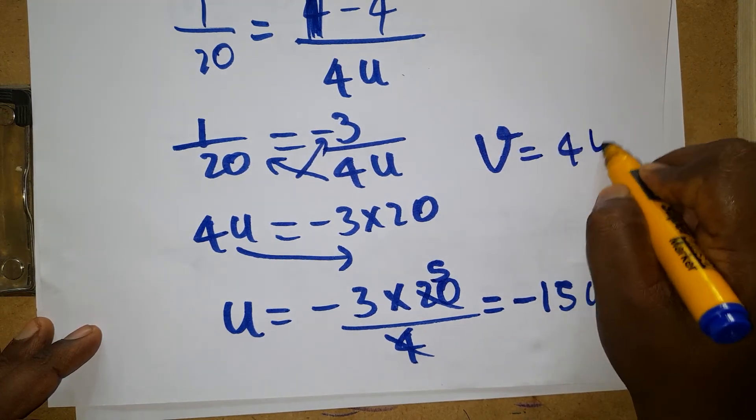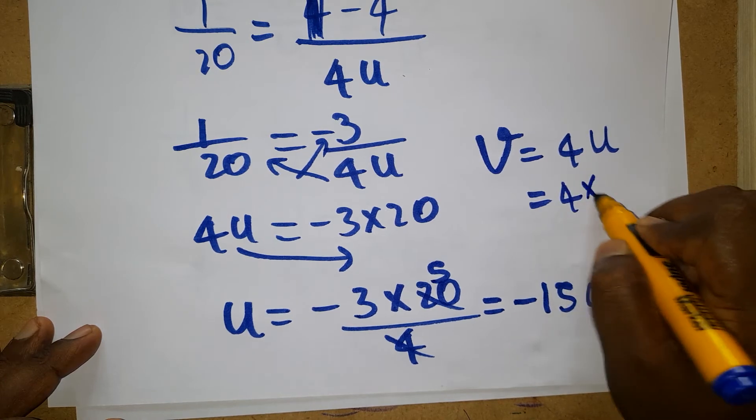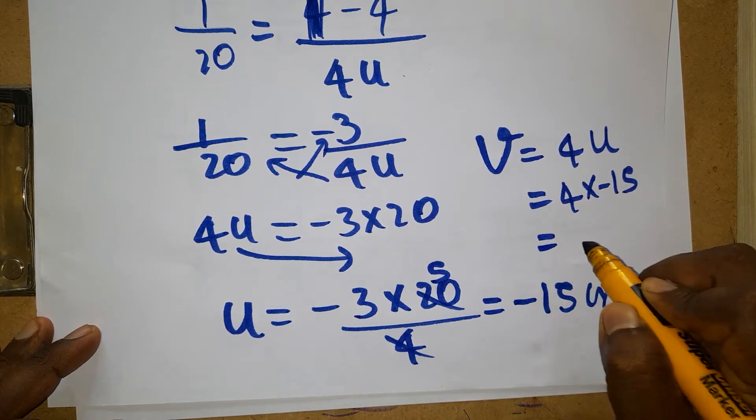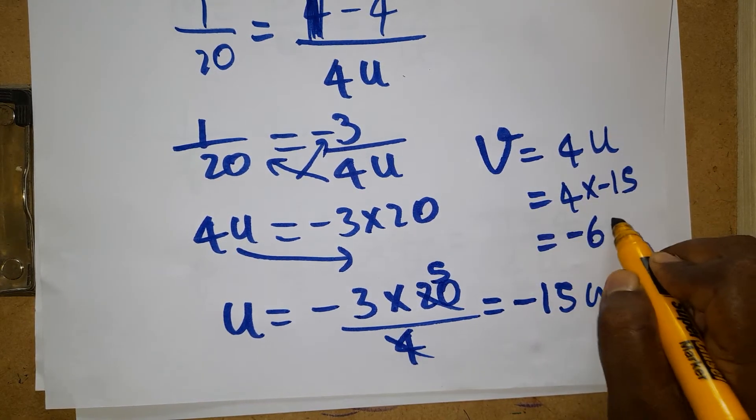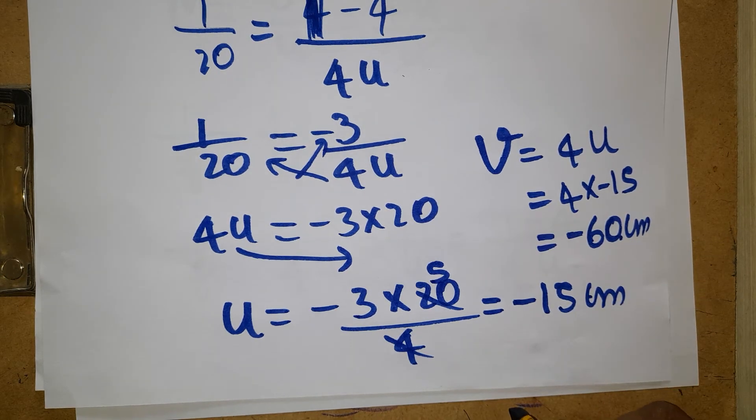What is v? v is going to be 4 times u. So u is 15, so 4 into minus 15, the answer will be minus 60 centimeters. So this ratio will give us 4. Thank you for watching my channel. If you like my channel, please subscribe. Thank you everyone.